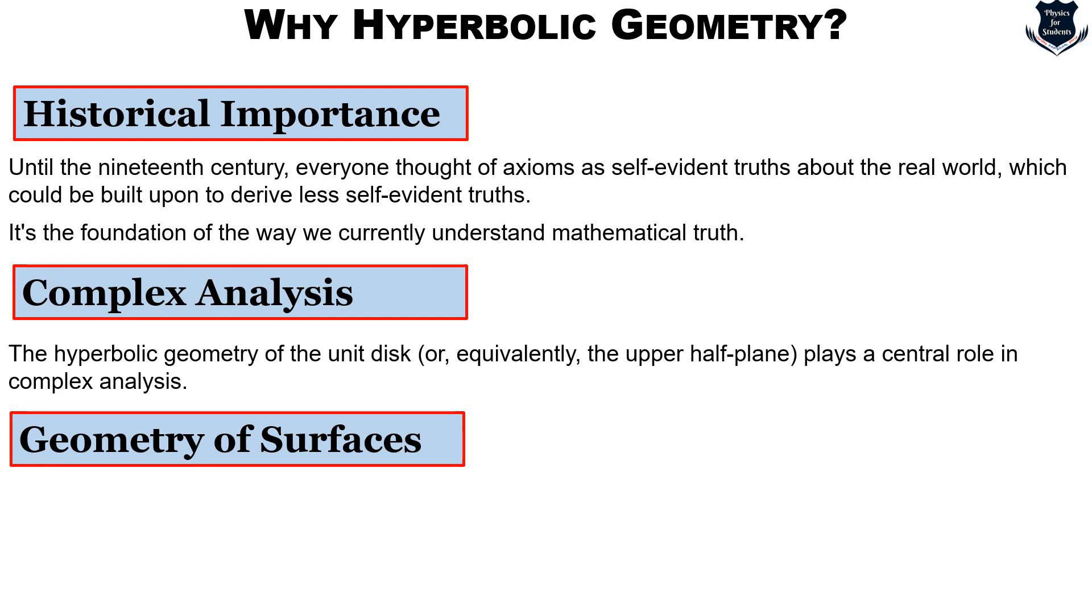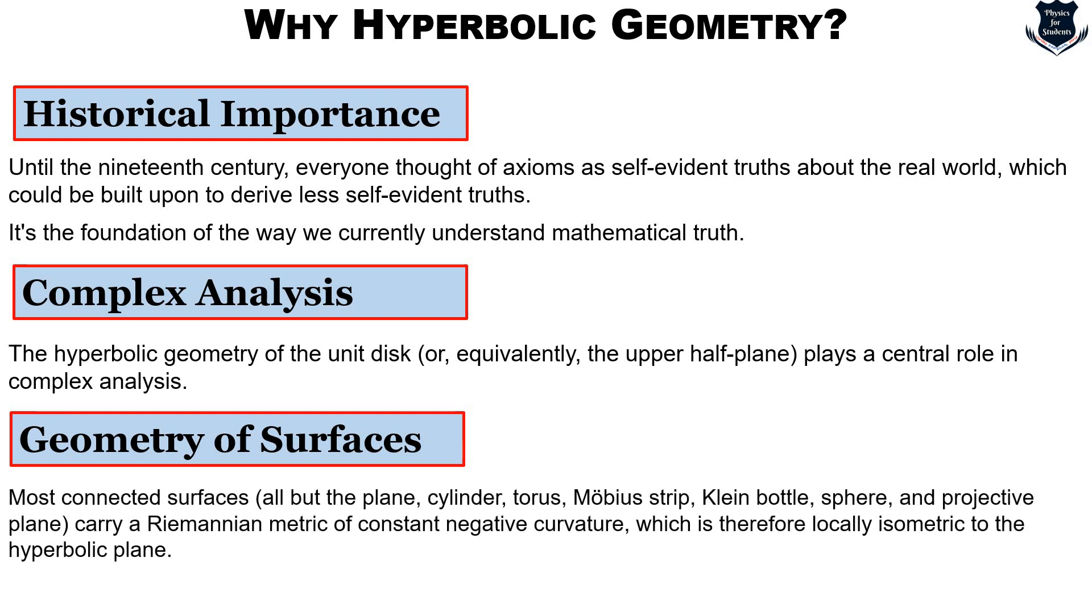If we talk of geometry of surfaces, most connected surfaces, all but plane, cylinder, torus, Möbius strip, Klein bottle, sphere, projective plane, they carry a Riemannian metric of constant negative curvature which means they are locally isometric to hyperbolic plane because they all have negative curvature, the entire hyperbolic plane. So moreover all such surfaces can be realized as quotients of the hyperbolic plane modulo discrete groups of hyperbolic isometries.